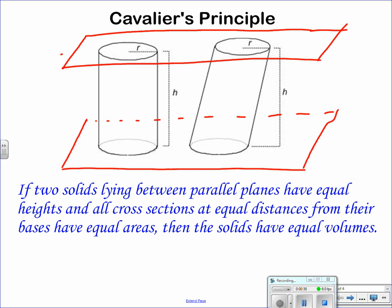So if I have two parallel planes, or even if I had a plane that sliced our cylinders, and they have equal heights. So the height of our right cylinder is going to be equal to the height of the oblique.